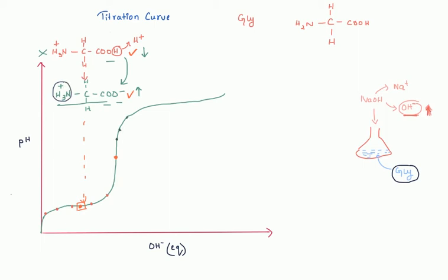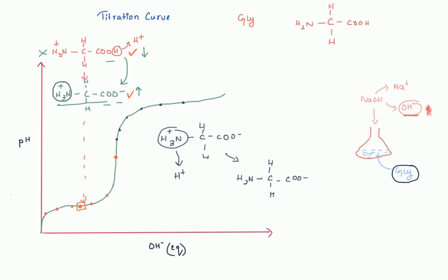Now the molecule needs to become further deprotonated, so it removes H⁺ from NH3⁺. Moving up the curve, we have the form where COO⁻ is present and NH3⁺ is present. This is slowly converted into NH2, while COO⁻ remains as it is. One H⁺ is donated from NH3⁺ into the solution, giving NH2 and COO⁻.